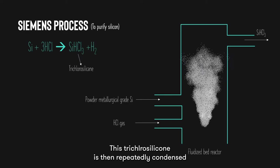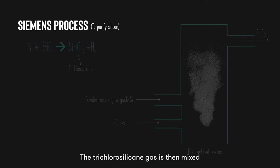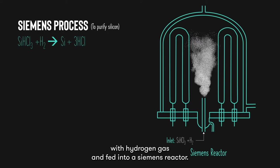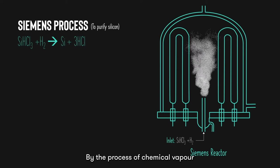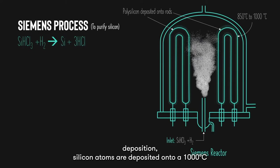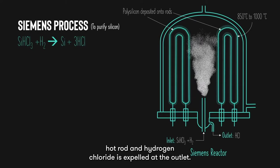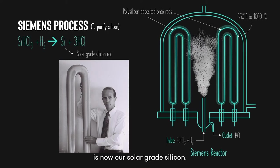This trichlorosilane is then repeatedly condensed and distilled to remove impurities. The trichlorosilane gas is then mixed with hydrogen gas and fed into a Siemens reactor. By the process of chemical vapour deposition, silicon atoms are deposited onto a 1000-degree hot rod and hydrogen chloride is expelled at the outlet. The silicon deposited at the rod is now our solar-grade silicon.